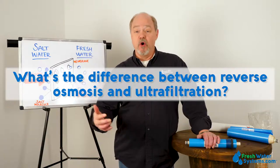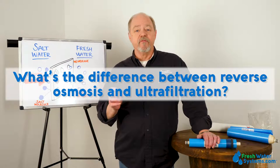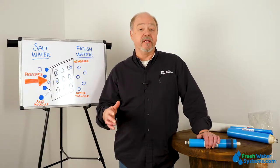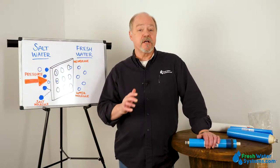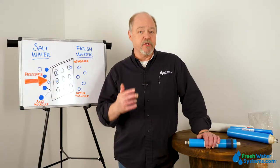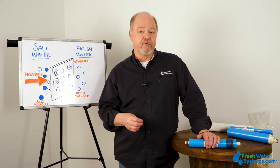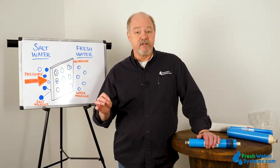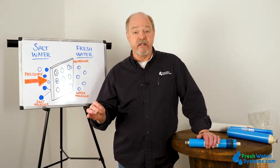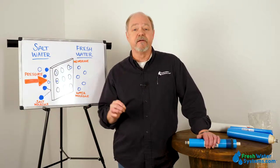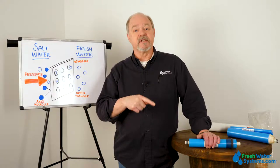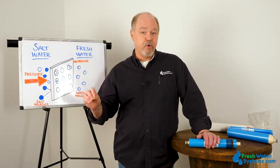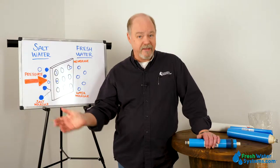What's the difference between RO and UF? Reverse osmosis and ultrafiltration differ quite a bit. Reverse osmosis is actually able to reject dissolved minerals from the water, where UF is only dealing with things that are solids or particulate, even though they're very tiny. So reverse osmosis is able to get out dissolved inorganic minerals — UF will let them pass through.